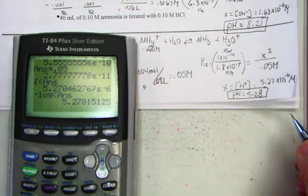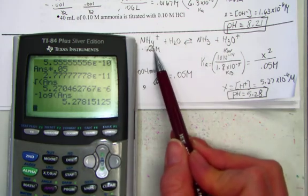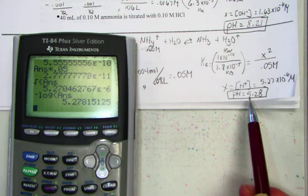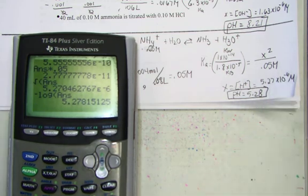That definitely makes sense. We are showing a hydrolysis of ammonium producing hydronium, and 5.28 is in the acid range. We've concluded the practice examples in our note pack on titration.